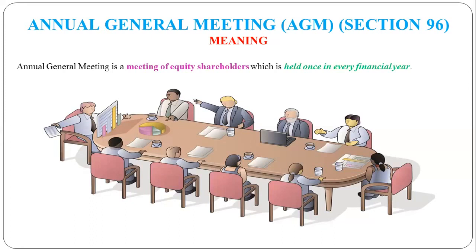The other type of shareholders are preference shareholders - they provide the company's capital but the preference shareholder's capital is repaid by the company after a couple of years. So who are the equity shareholders and who are the preference shareholders, we are going to study in detail. You have to understand that the Annual General Meeting is for equity shareholders, and the second aspect is the financial year.